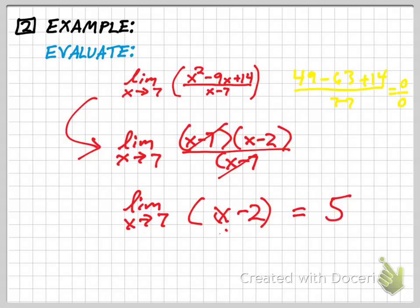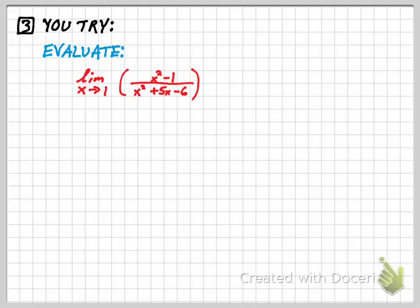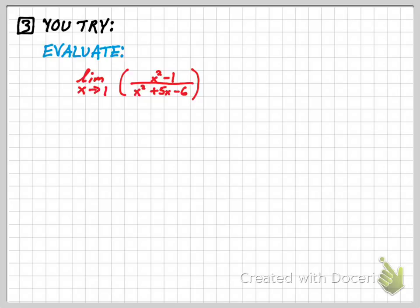Here's a you try to finish. Once again, think about factoring. See if you can evaluate this limit. Hopefully got two sevenths. Again, careful factoring is important, but you end up with a term that cancels and a simplified version of the original function: x plus 1 over x plus 6. When you take the limit of that, you get two sevenths.